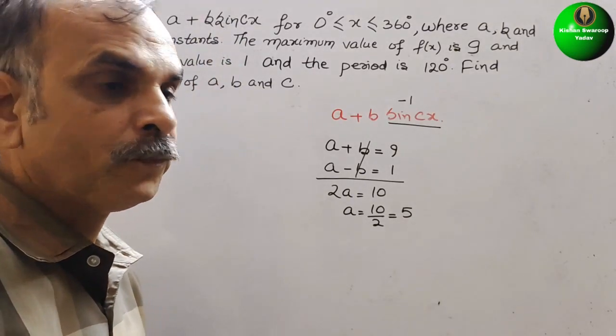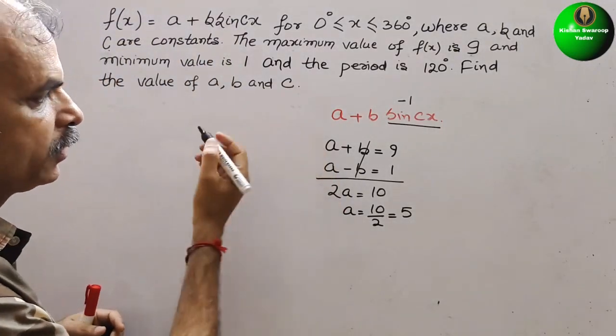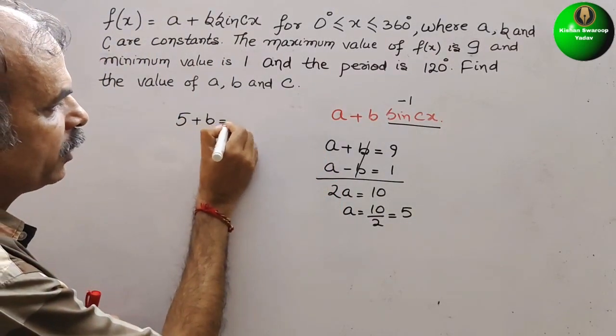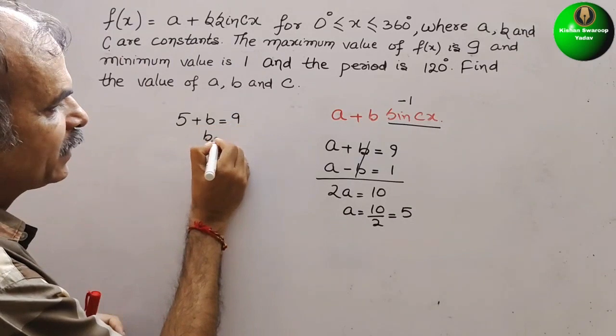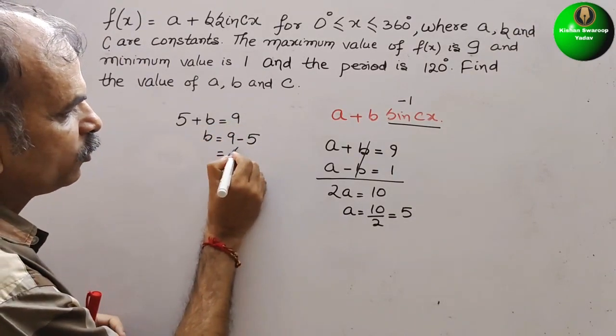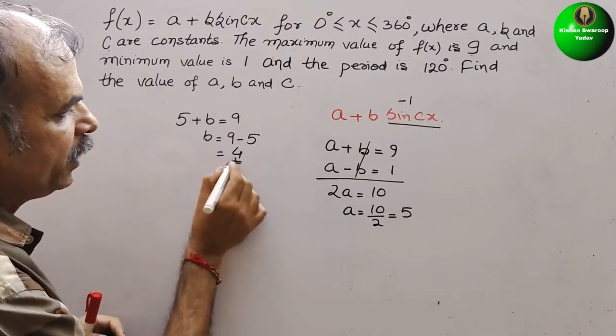What is your b? Substitute here. So we will get 5 plus b is equal to 9. So we can say b is equal to 9 minus 5. That is equal to 4. b is 4.